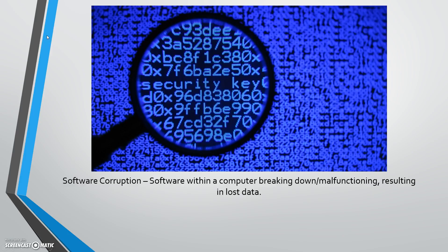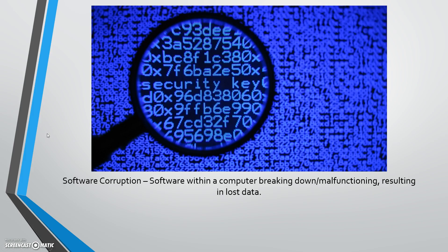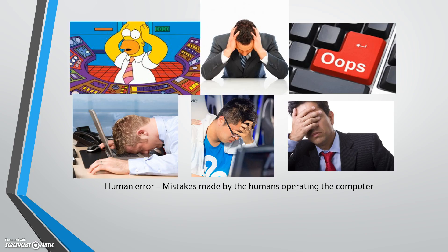The second one could be software corruption. Instead of the first example, which is hardware, it's software corruption — software within a computer breaking down or malfunctioning, resulting in lost data.